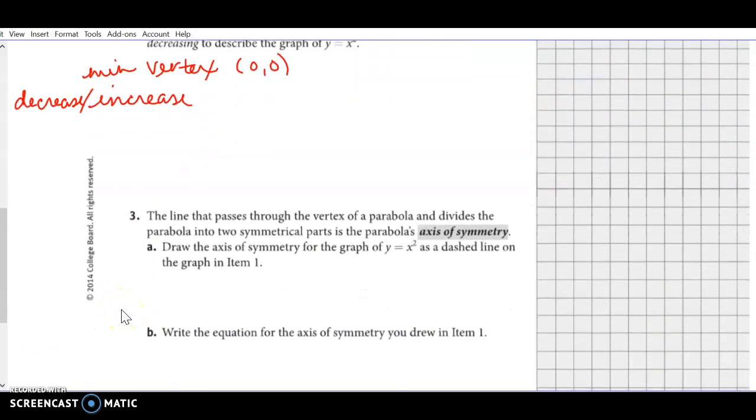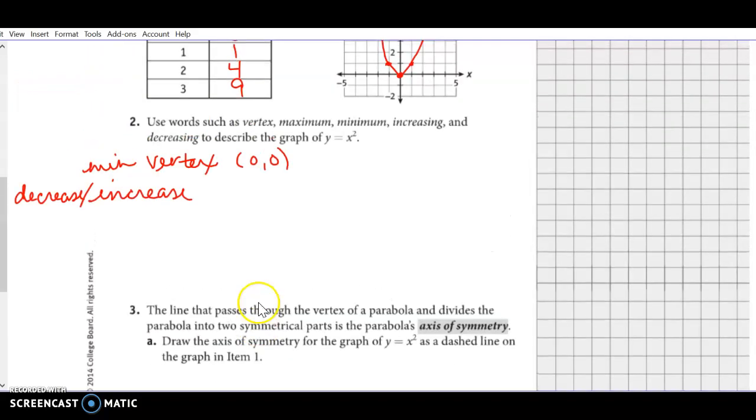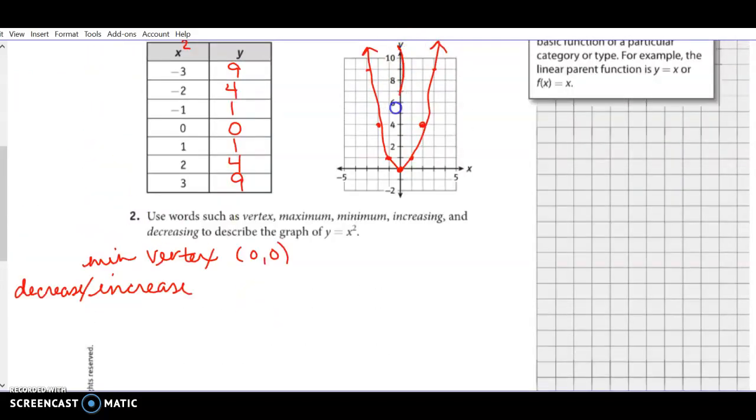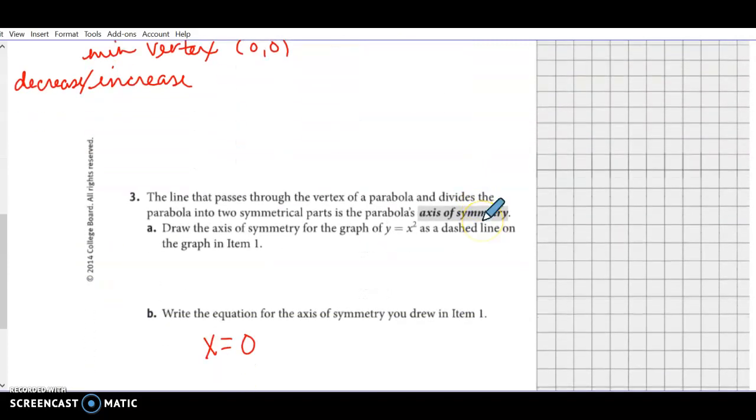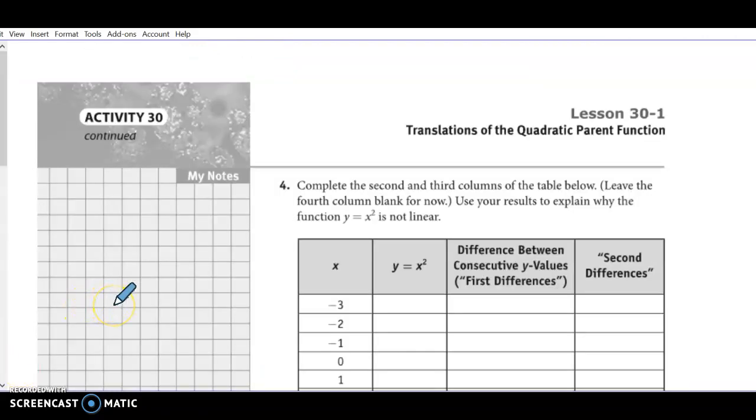When we draw our axis of symmetry, the equation for the axis of symmetry is x equals 0. Our line of symmetry will go through the origin. When we write our vertex, we have our h. So it's always x equals h.